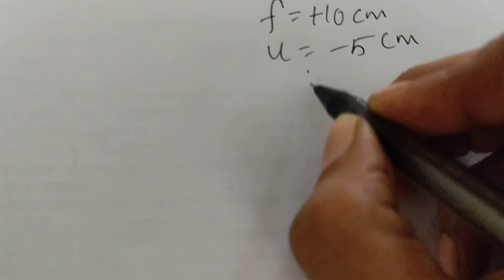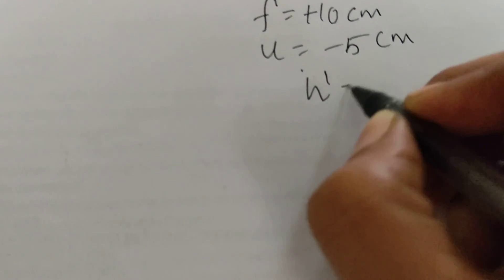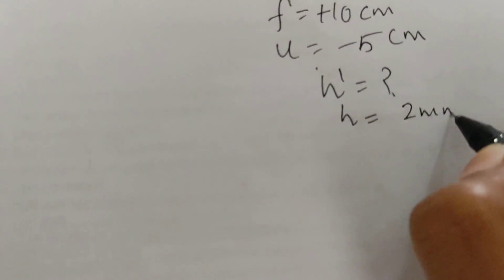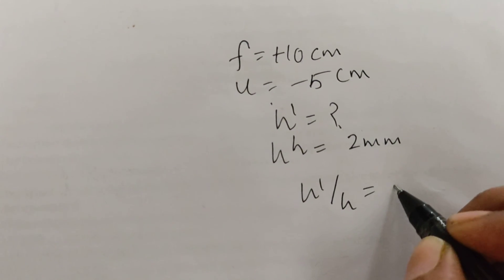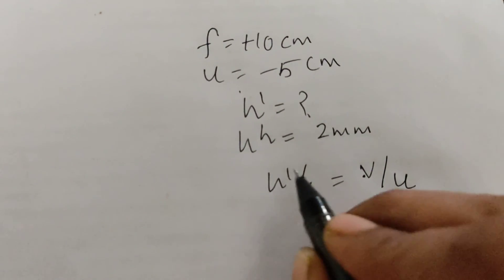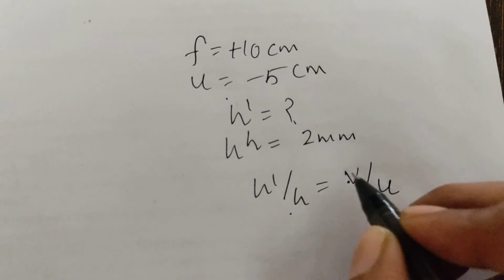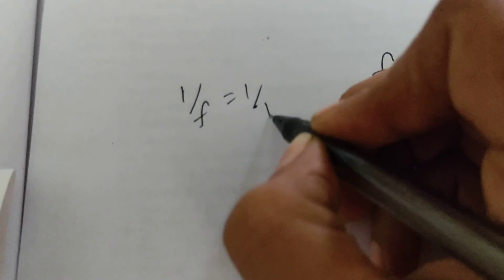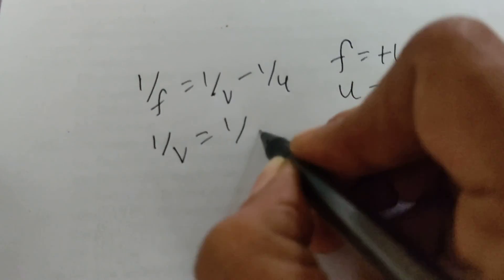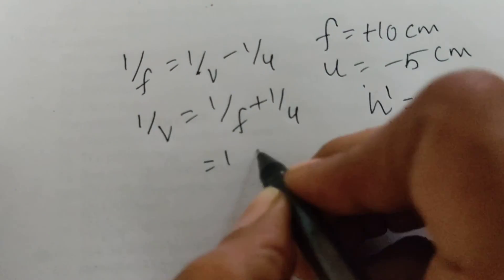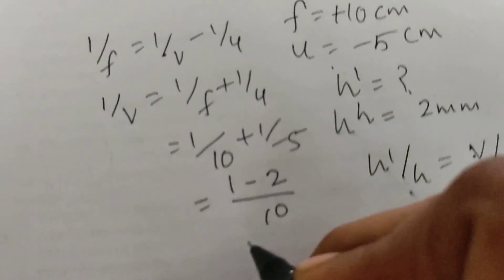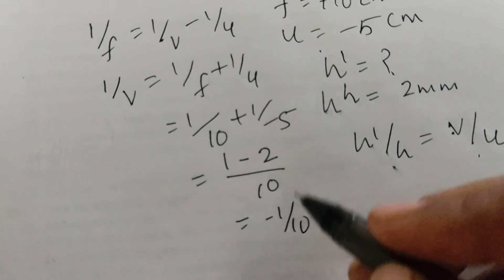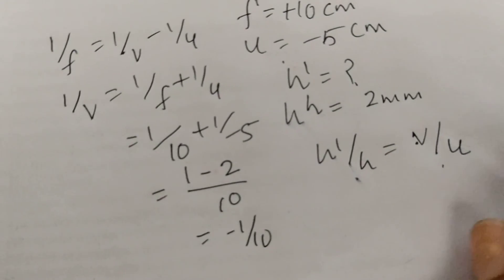Since it is a convex lens, focal length f is +10 cm and u is −5 cm by convention. We need to find h′, where h is 2 mm. We know that h′/h equals v/u for a lens. We need v first, so using the lens formula: 1/f = 1/v − 1/u, giving 1/v = 1/f + 1/u = 1/10 + 1/(−5). Taking LCM of 10, this gives (1 − 2)/10 = −1/10.